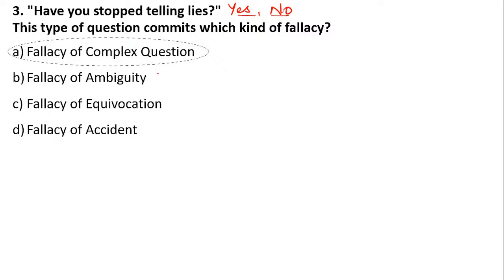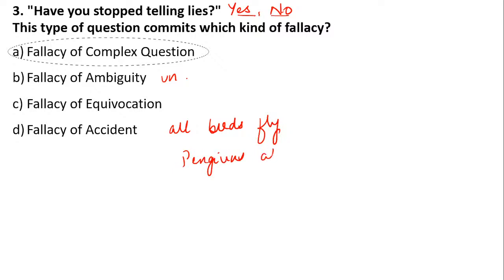Ambiguity means unclear expression. Equivocation means words with similar meaning used differently. Fallacy of accident means that there are some things that follow the general rule, but there are exceptions. For example: all birds fly — so penguins also fly. This is wrong. We know all birds generally fly, but there are exceptions. Penguins don't fly. So this is the fallacy of accident — some things that don't follow the normal convention.